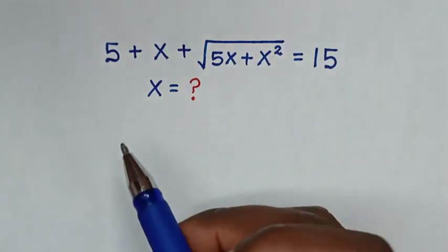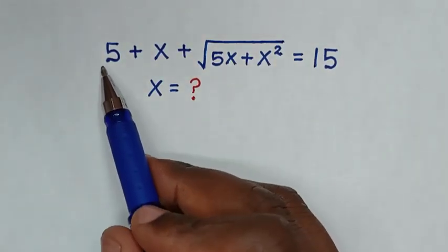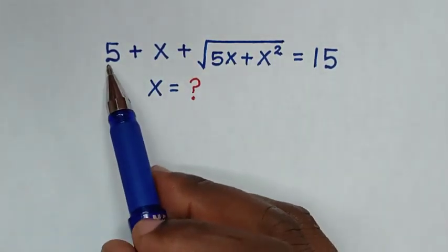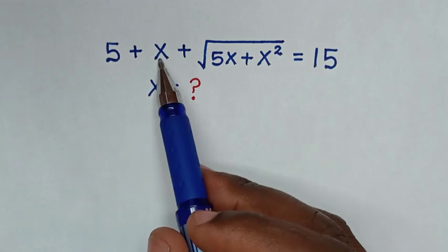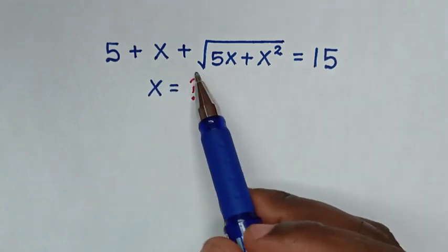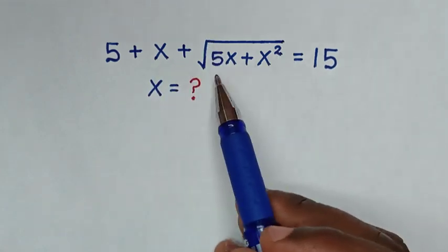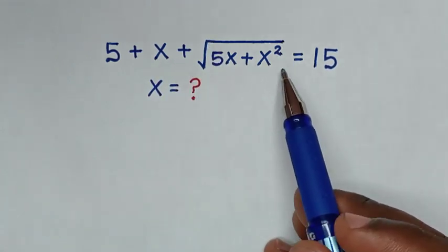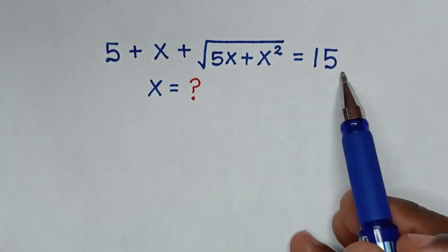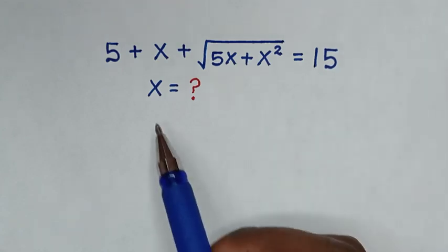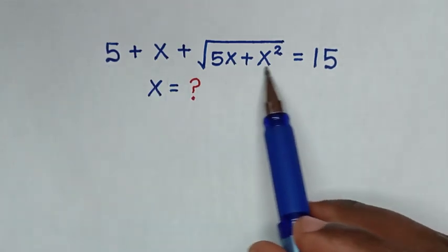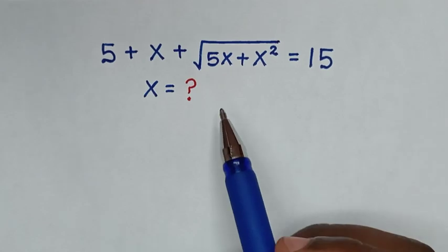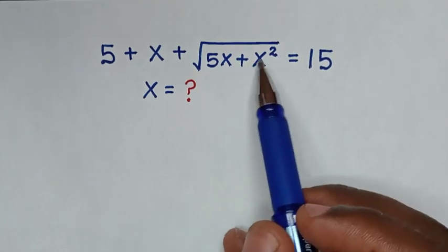Hello, you are welcome to solve this math problem which is 5 plus x plus square root of 5x plus x square is equal to 15, to find the value of x from this equation. First we should note that